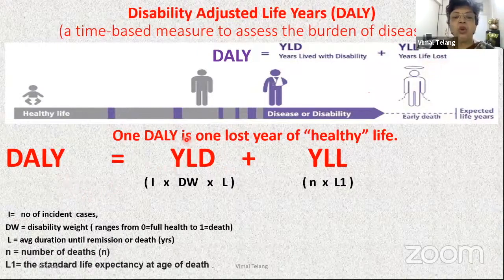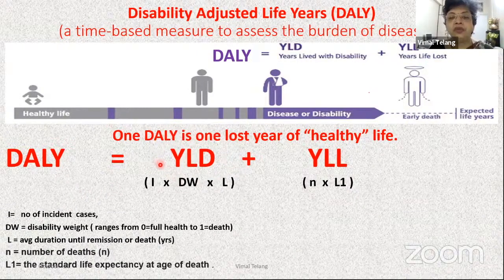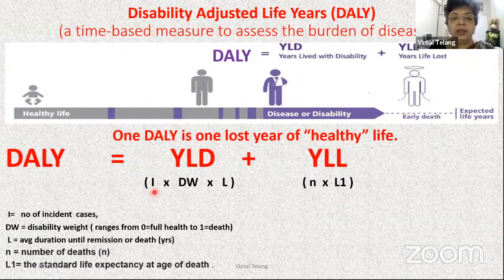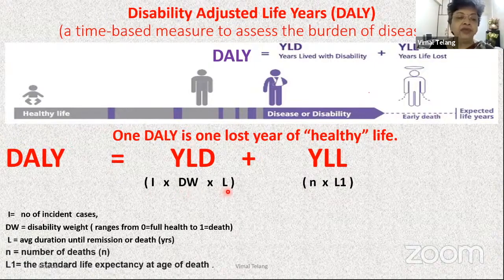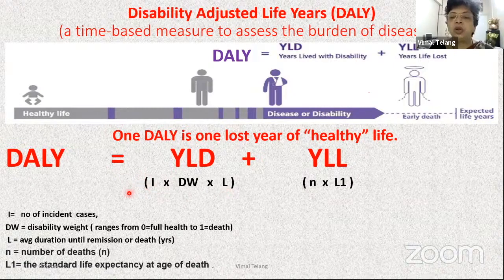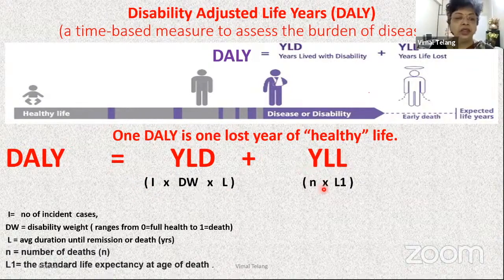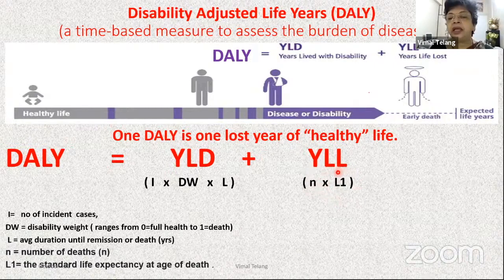How do you estimate YLD — years lived with disability? The mathematical formula is: I (incidence) multiplied by DW (disability weight) multiplied by the average duration until remission or death. Nowadays, prevalence is also used. For years of life lost (YLL), it is N (number of deaths) multiplied by L, the standard life expectancy at the age of death.